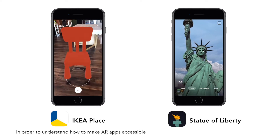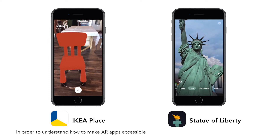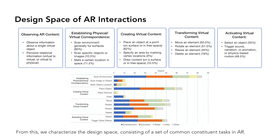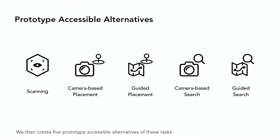In order to understand how to make AR apps accessible, we first performed an analysis of the functionality and design of existing apps. From this, we characterized the design space consisting of a set of common constituent tasks in AR. We then created five prototype accessible alternatives of these tasks.